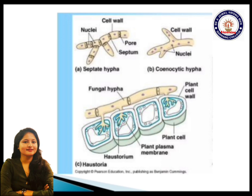Looking at the third picture, there is a formation of a haustorium-like structure. Haustoria are peg-like appendages responsible for absorbing nutrients from the host plant. They adhere to the surface of the host plant or host organism and obtain nutrients from it.